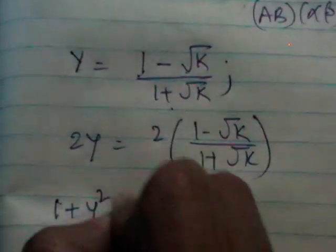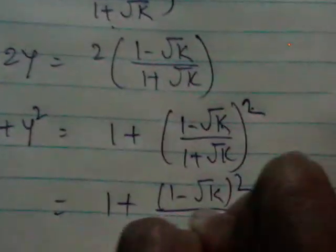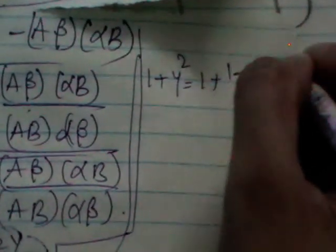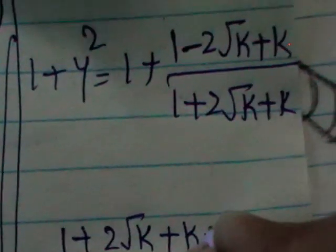What is denominator there? 1 plus Y square which is nothing but 1 plus. So the square is for numerator as well as for denominator. Again, it is in the form of A minus B whole square and A plus B whole square. So 1 plus Y square is equal to 1 plus A minus B whole square means root K whole square is K itself. You will get 1 plus Y square. 1 minus 2 root K plus K by 1 plus 2 root K plus K. You take the LCM which is nothing but 1 plus 2 root K plus K. 1 plus 2 root K plus K plus 1 minus 2 root K plus K. Plus 2 root K minus 2 root K cancels. 1 plus 1 is 2. K plus K is 2K.